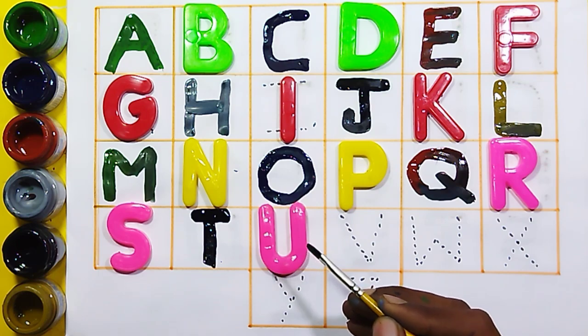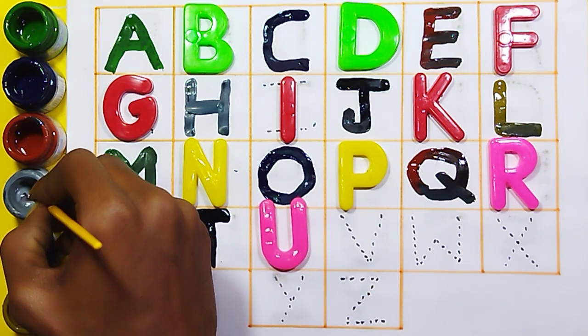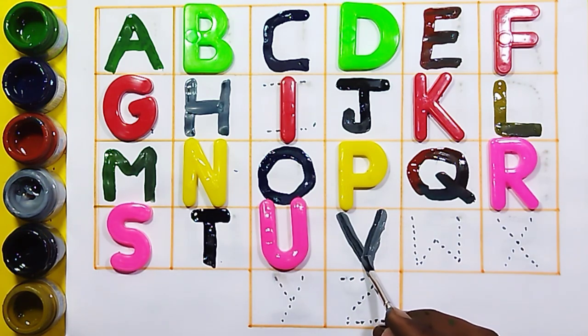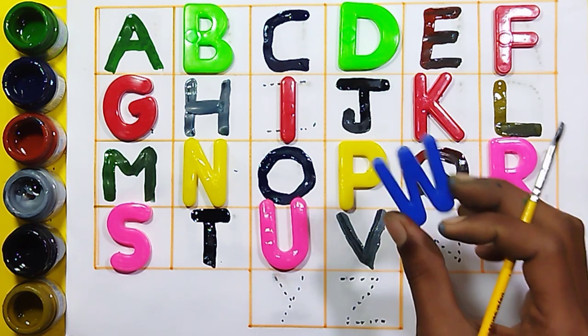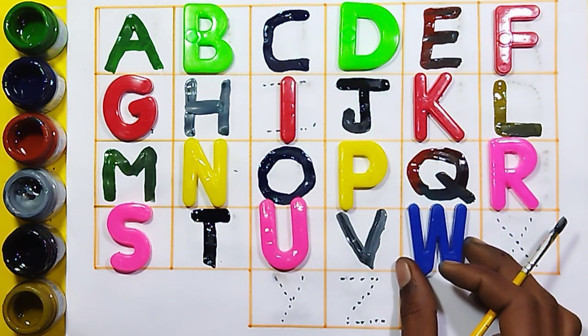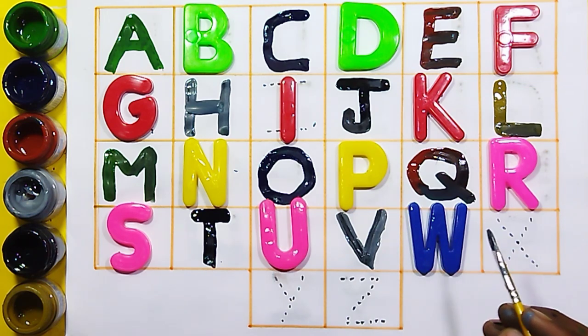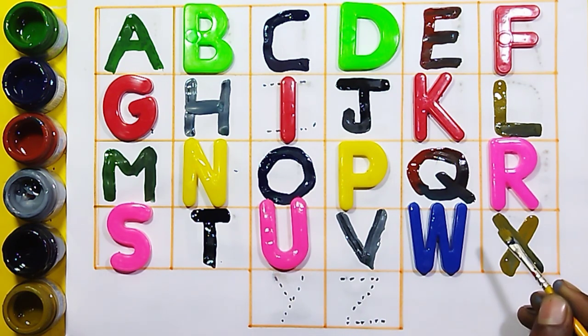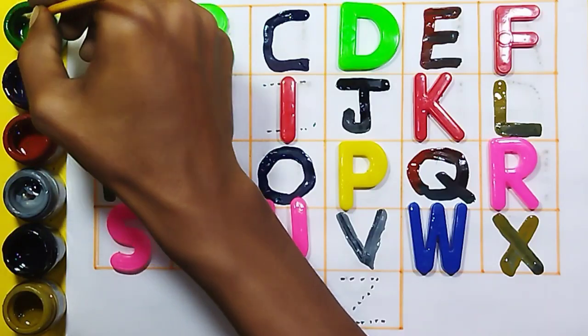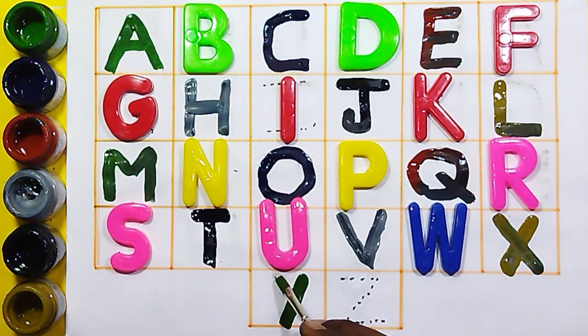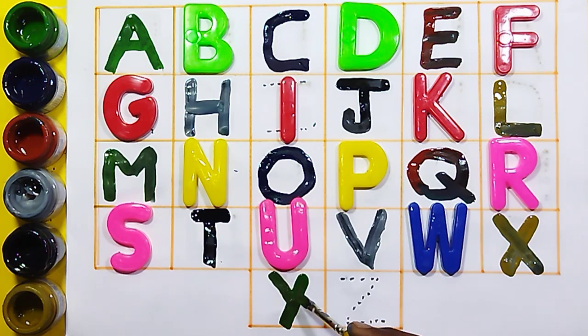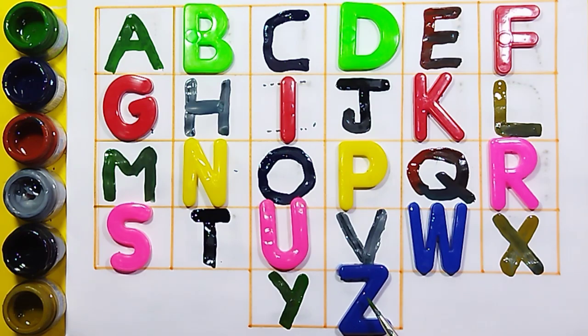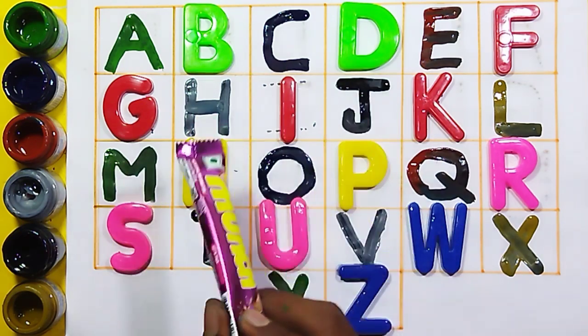U, U for umbrella. Gray color V, V for vegetable. W, W for watch. Yellow color X, X for xylophone. Green color Y, Y for yak. Blue color Z, Z for zebra. Now children, let's read together. You all say it with me.